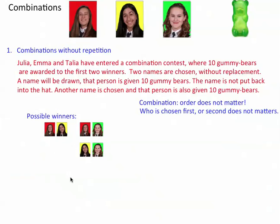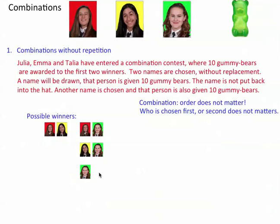If we choose Talia first, can we choose Julia? Yeah, why not — we don't have that already. If we choose Julia first, can we then choose Emma? No, we already have that scenario — there's no difference between these two. If Julia wins first, can we pick Talia? No, because we already have that. And if we pick Julia first, can we then pick Julia second? No, because it's without replacement. So there are only three possible outcomes.